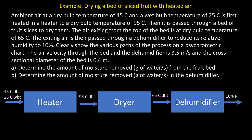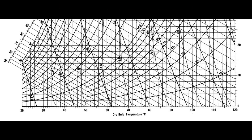Now let's look at a psychrometric chart and plot the various points on the chart. First we identify the dry bulb temperature of 45 degrees Celsius, then follow the lines both for the wet bulb and dry bulb and they will meet at point A. Point A represents a dry bulb temperature of 45 degrees Celsius and a wet bulb temperature of 25 degrees Celsius — this is the condition of the ambient air.